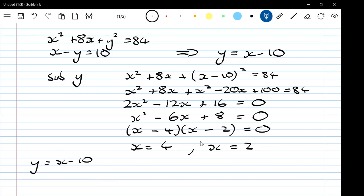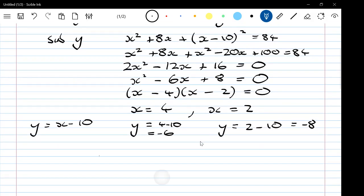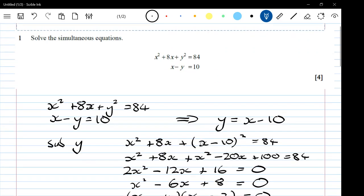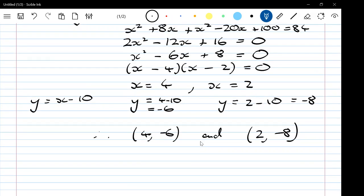So that is y equals 4 minus 10, so negative 6. Y is 2 minus 10, so negative 8. So we have two solutions: the point (4, -6) and (2, -8). And that's that done. That's maths.